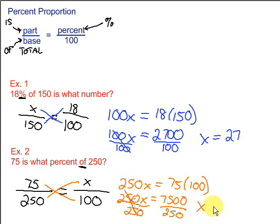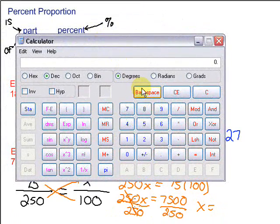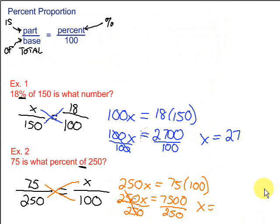We're left with x equals 7500 divided by 250. Let's go back to our handy dandy calculator. 7500 divided by 250 equals 30. So our answer here is x equals 30.